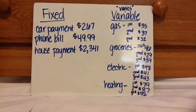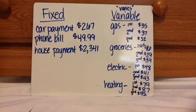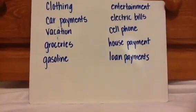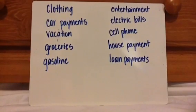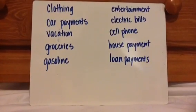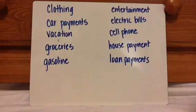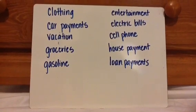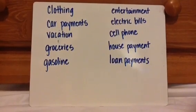I hope you have an idea of fixed and variable expenses. Now let's look at some examples, and you decide where they belong. Look at this list and write F next to it if you think it's a fixed expense — meaning the same amount every time — or a V for variable expense, meaning it's going to vary from time to time every time you pay.